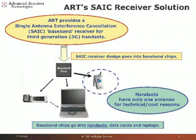Our solution to this intercell interference problem is an advanced receiver called a single antenna interference cancellation receiver, or SAIC receiver. We are building this receiver as a hardware subsystem to be integrated into a baseband chip. The baseband chip is the primary communications component of handsets or laptop data cards, etc.